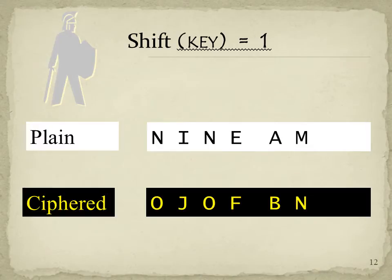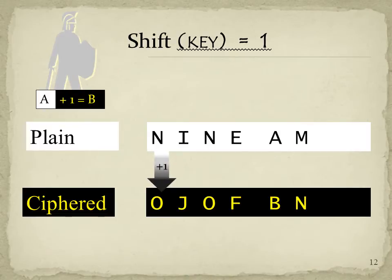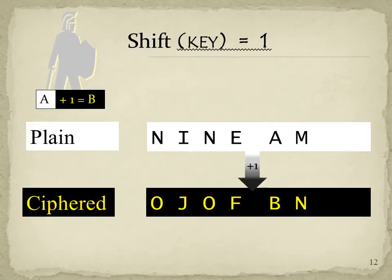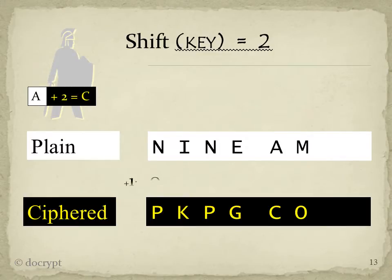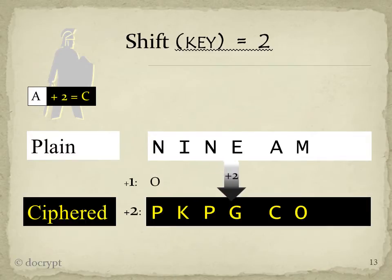Caesar cipher simply shifts the plain text by the number denoted by the key. So with a key of 1, a plus 1 equals b. Likewise, n plus 1 equals o, i plus 1 is j, e plus 1 is f, a plus 1 is b, etc. And with a key of 2, a plus 2 equals c. Likewise, with our plain text message, n becomes p, i becomes k, e becomes g. Sometimes counting on the fingers helps a lot.